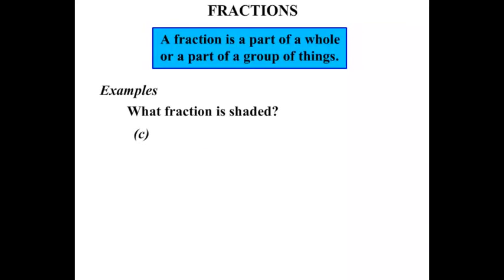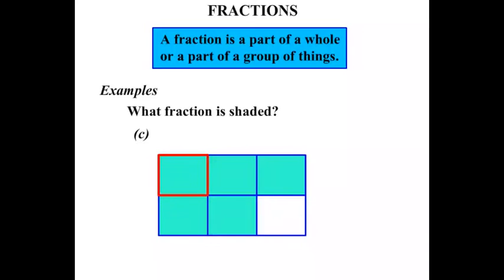Our next one. Another rectangle this time split up into 1, 2, 3, 4, 5, 6 equal pieces. So it's over 6. And how many are shaded? 1, 2, 3, 4, 5. So 5 are shaded out of 6. 5 over 6. We say that as 5 sixths.